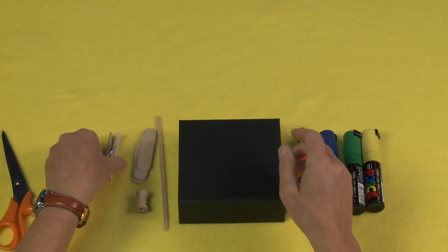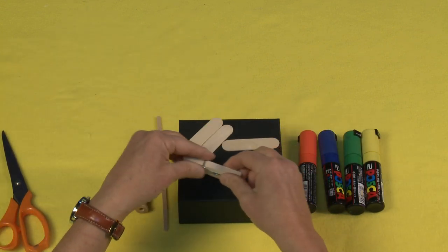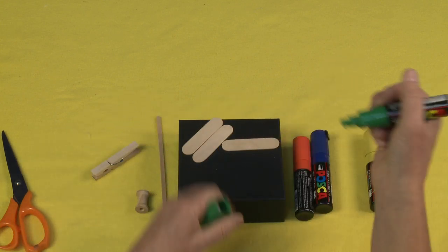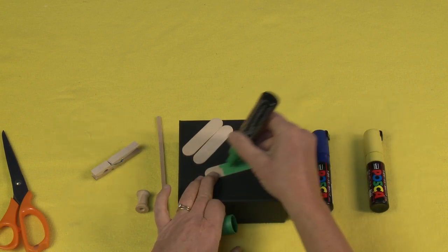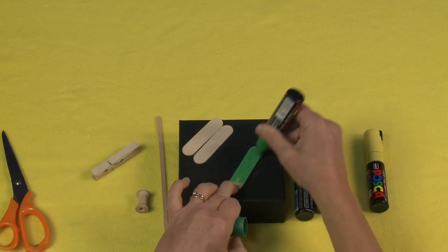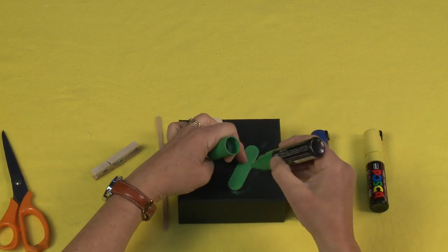So the first thing I'm going to do is paint all my wooden pieces. I'm going to be using my UniPosca pens just because they're so easy to manage and maintain, and I'm going to cover them with a nice thin layer of paint. I'm going to do that for all of my different pieces.